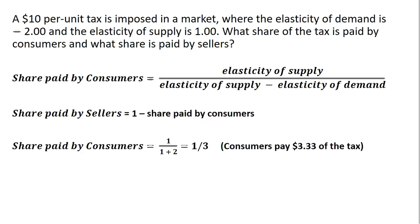In this problem, the elasticity of supply is 1, so we've got 1 in the numerator. We're also going to have the elasticity of supply in the denominator minus the elasticity of demand — minus minus 2 — which just gives us 2 in the denominator, and we get 1 third. So the consumers will pay 1 third of the tax; in this case, 1 third of $10 is $3.33.